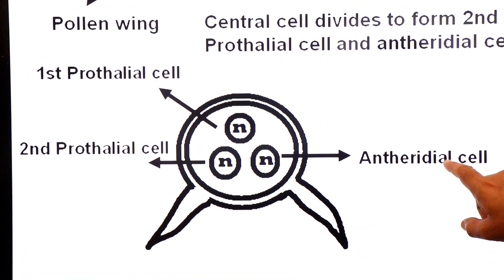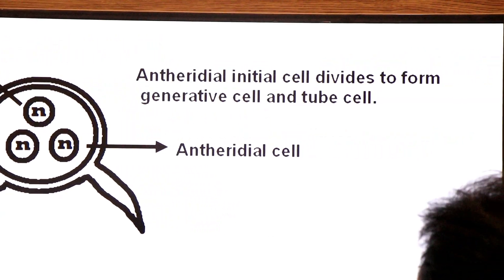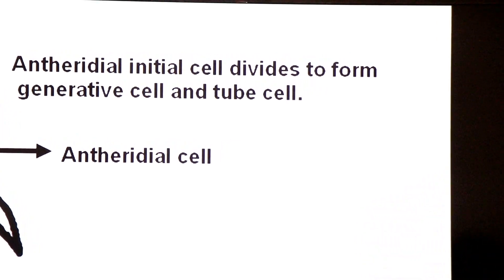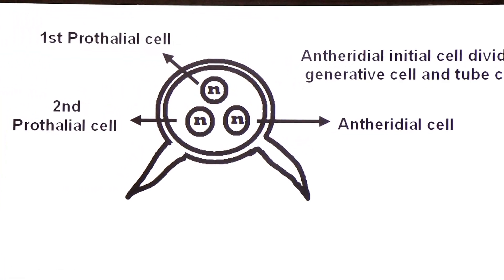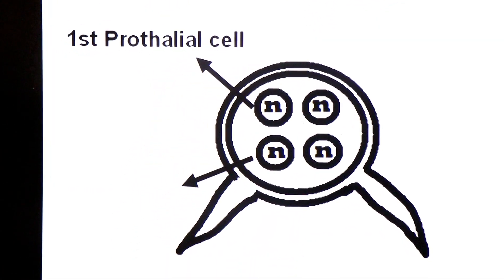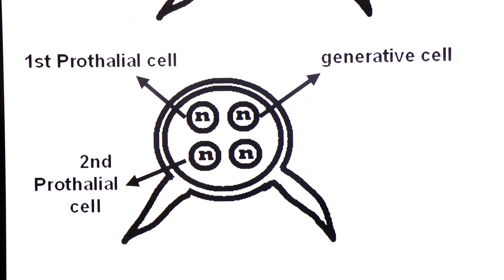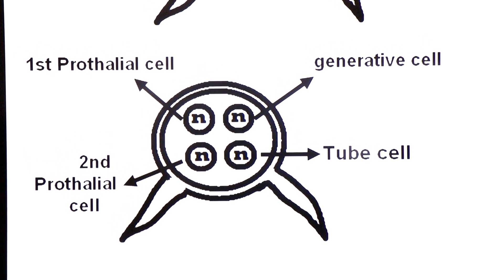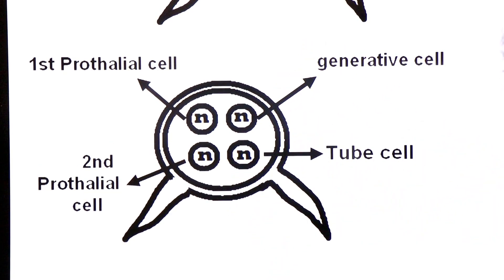The antheridial cell — also called the antheridial initial cell — divides to form a generative cell and a tube cell. So the immature male gametophyte pollen grain now has four cells: first prothallial cell, second prothallial cell, generative cell, and tube cell — all haploid.